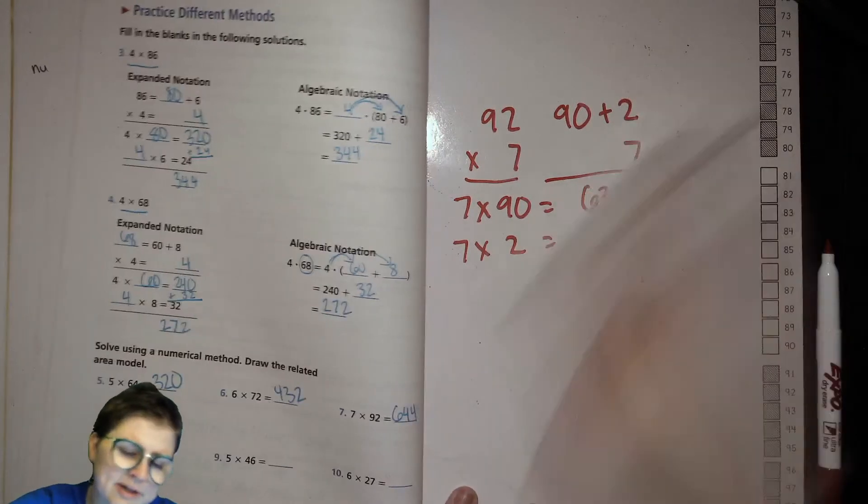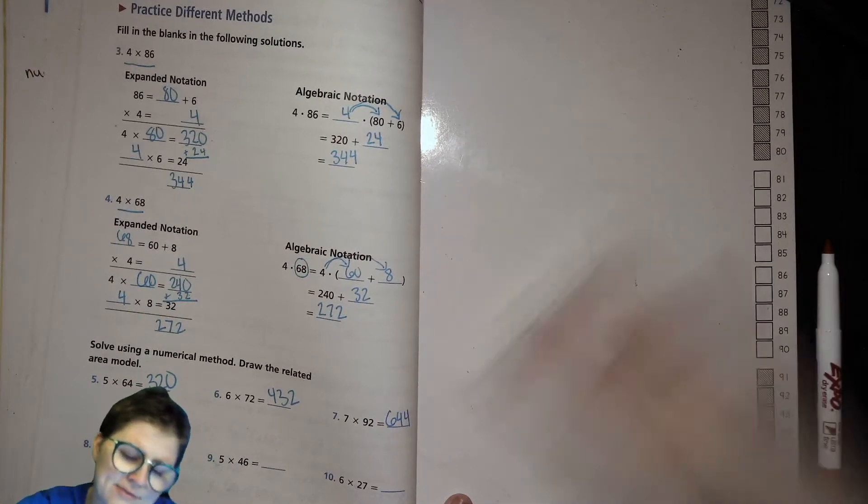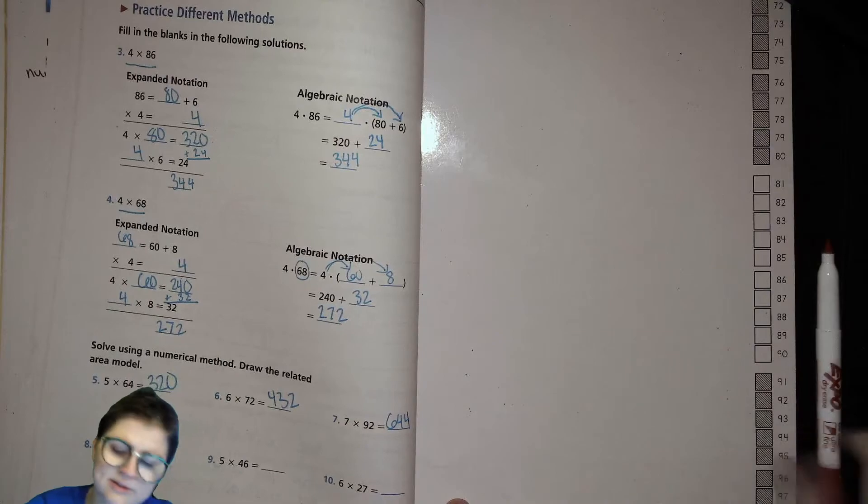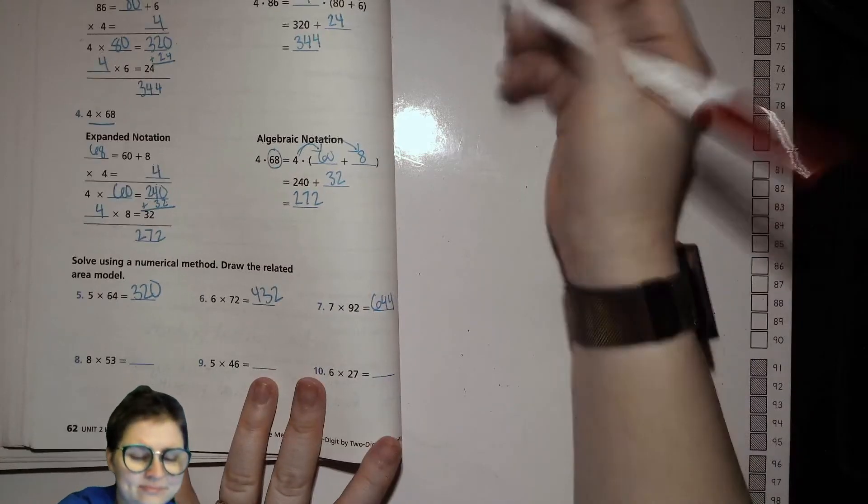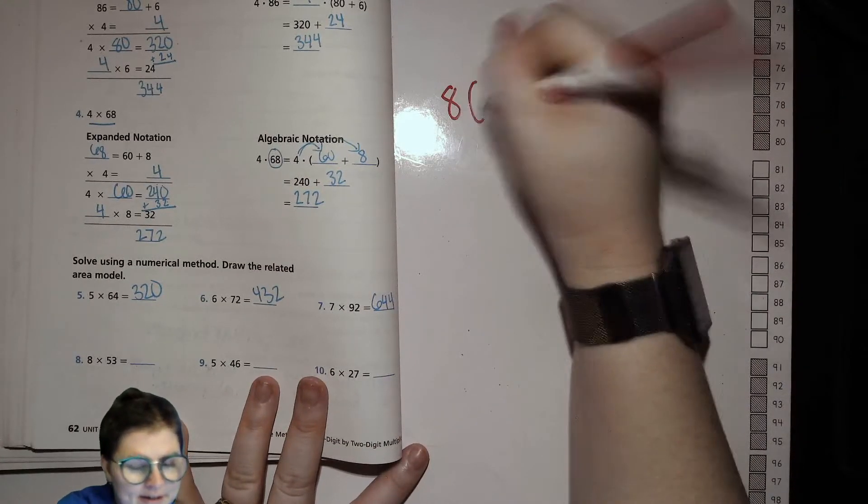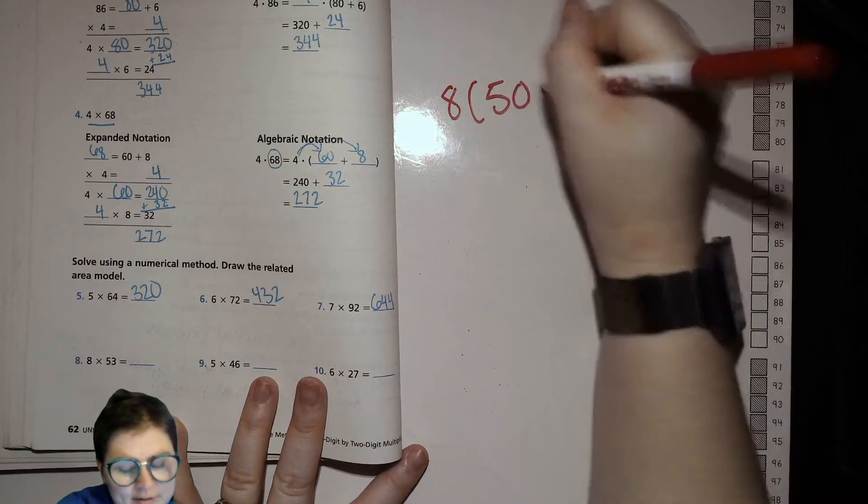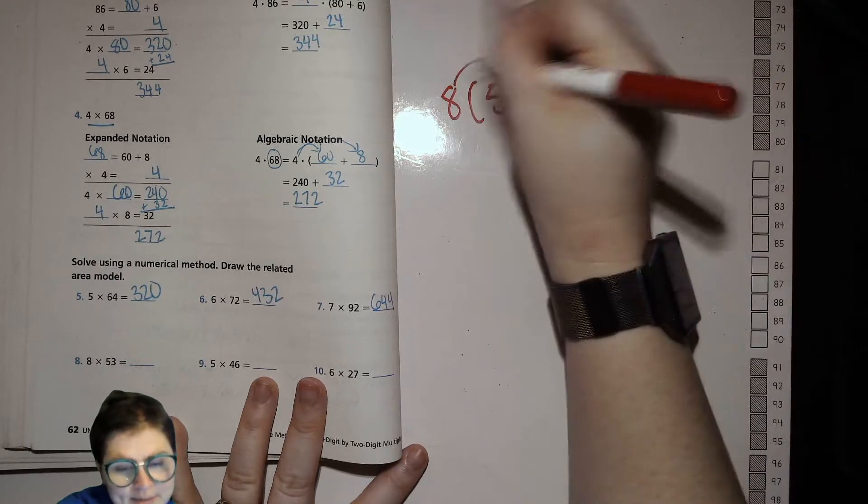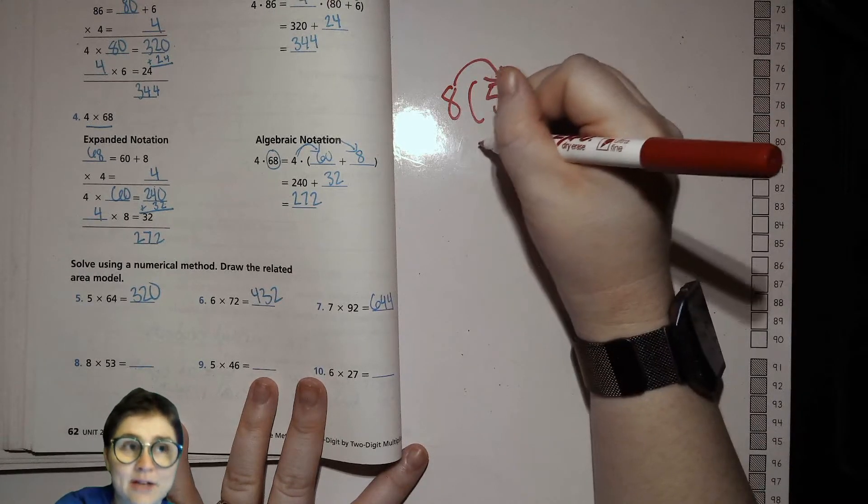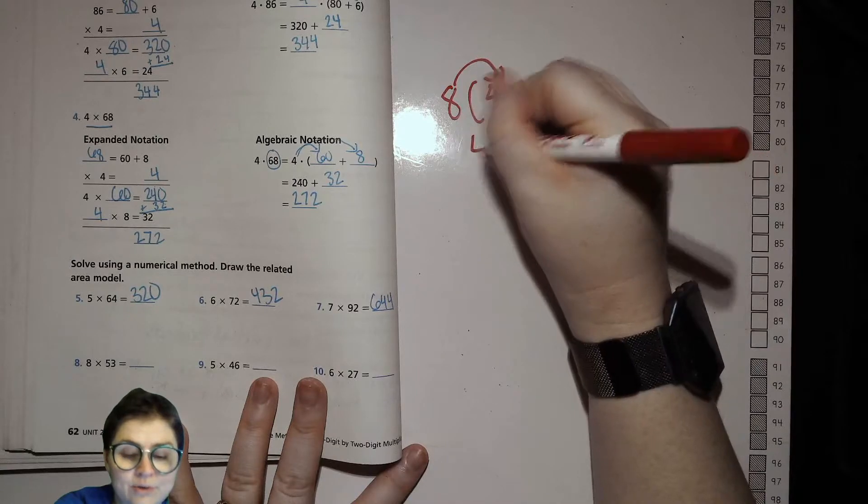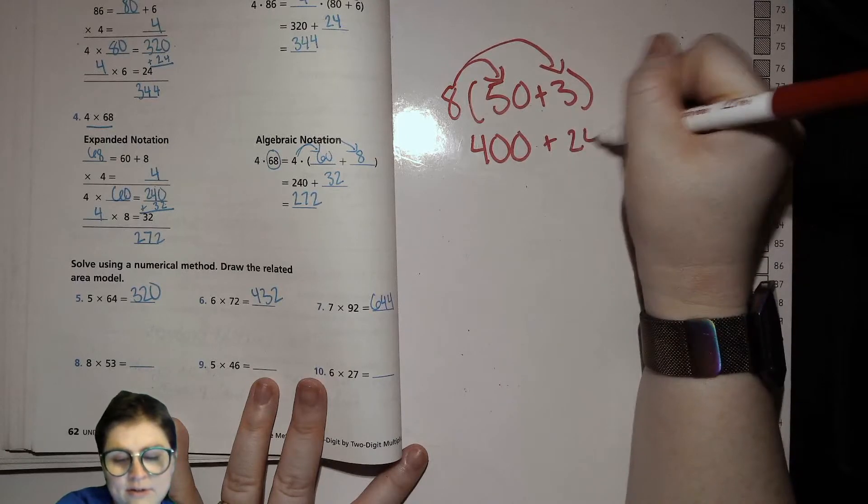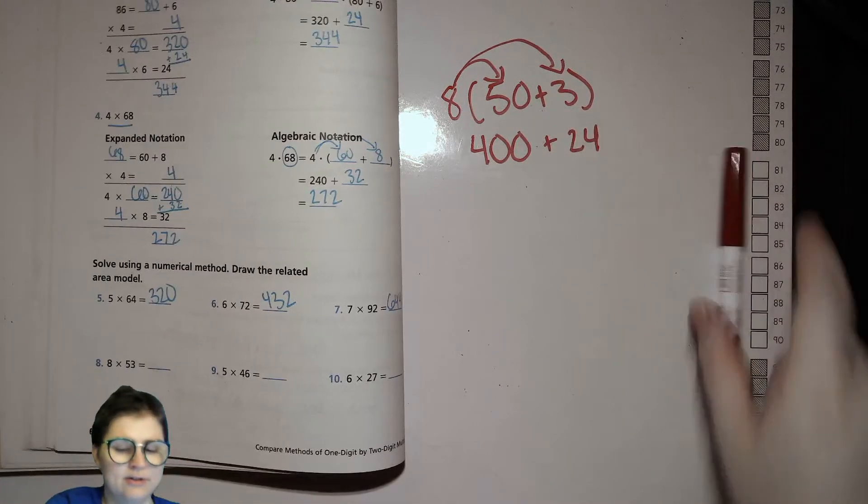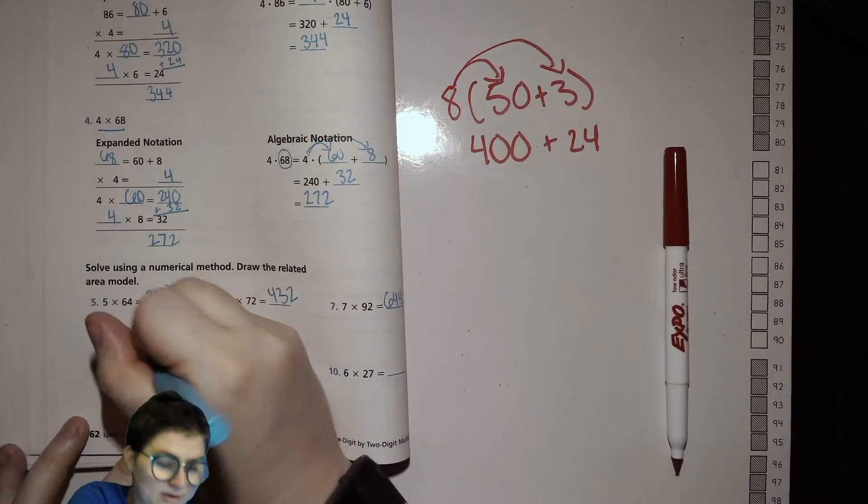If you did these ones with me, I want you to go ahead and be brave, try these ones without me and then I'll correct them with you. 8 times 50 plus 3. 8 times 5 is 40, so 40 tens. 8 times 3 is 24. That's just 424.